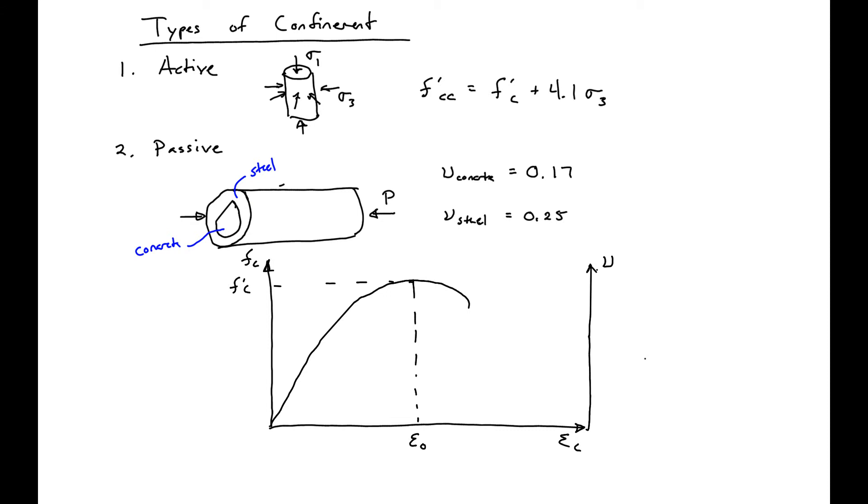So what's going to happen, or our steel then, is going to have a Poisson ratio constant at about 0.25.